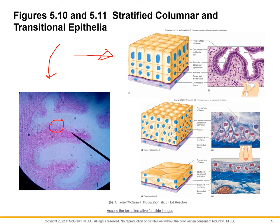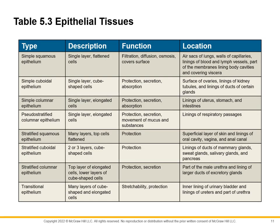We have a summary chart that goes over these tissues and their descriptions. For the two we don't have lab pictures for — stratified cuboidal and stratified columnar — you don't need to know their locations. You just need to know the name and the description. For example, if asked for the name of a tissue that is multiple layers of column-like cells, you should be able to say stratified columnar. That covers epithelial tissue — have a great day.